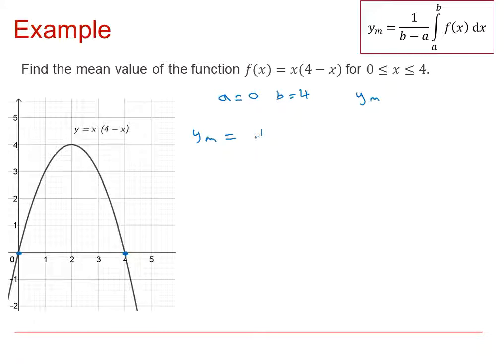So y_m = 1/(4 - 0) times the integral from 0 to 4 of x(4 - x) dx. That's 1/4 of the integral of (4x - x²) dx.